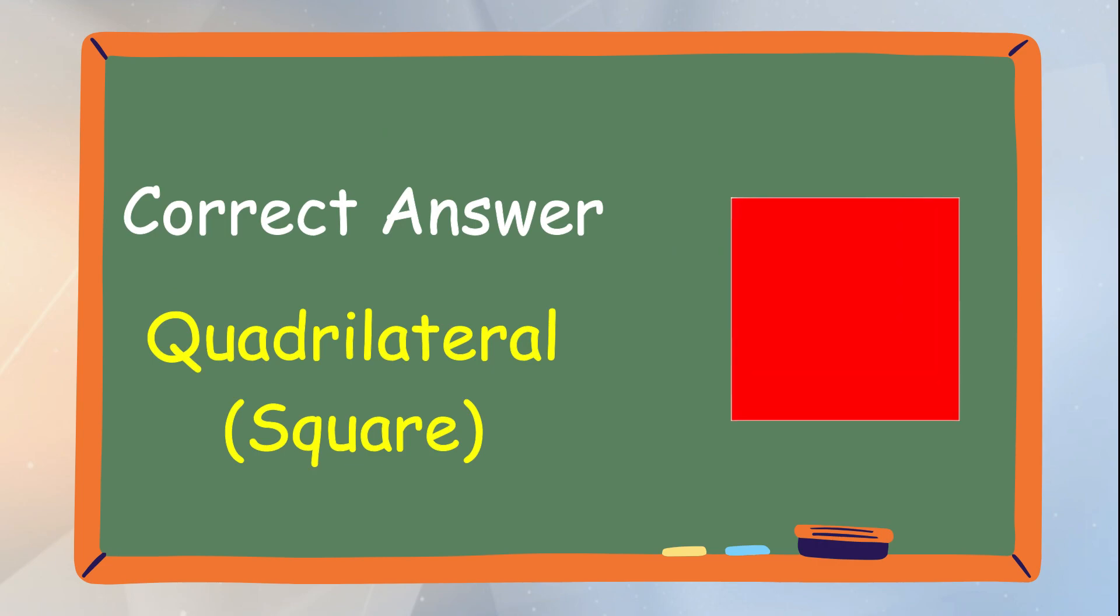The correct answer is the square. The square is a quadrilateral with four sides that has equal length, while the rectangle is a quadrilateral wherein the length of the opposite sides is equal and parallel to each other.